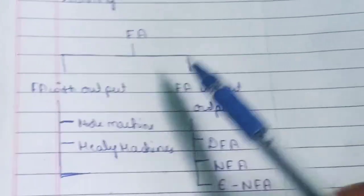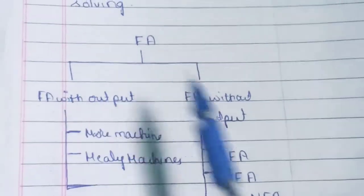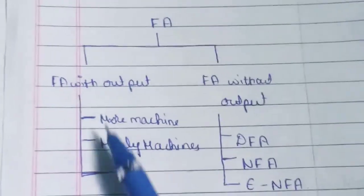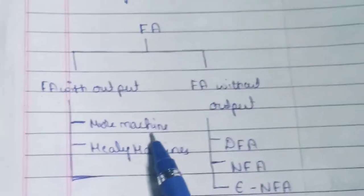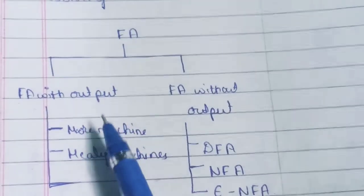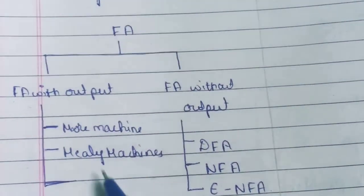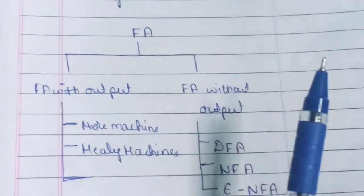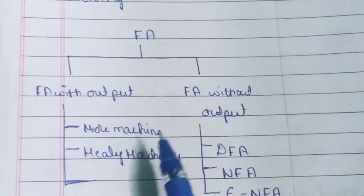Now let us look at the types of finite automata. They are broadly classified into two types: with output and without output. With output is further classified into two types: Moore machine and Mealy machine. In a Moore machine, the output completely depends on the current state, whereas in a Mealy machine, the output depends on two components: the current state and the values of the input symbols.